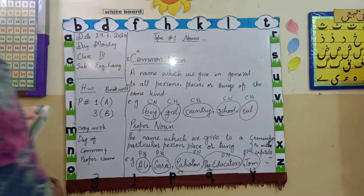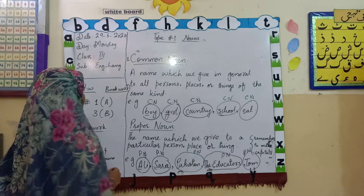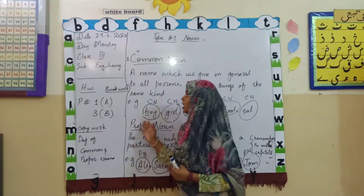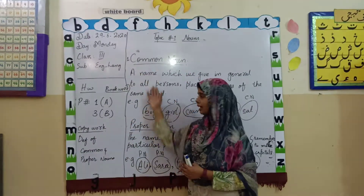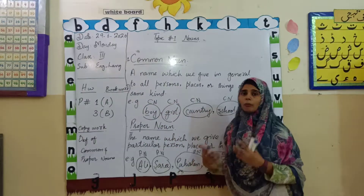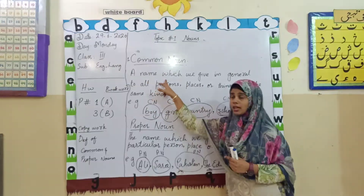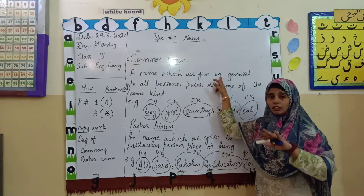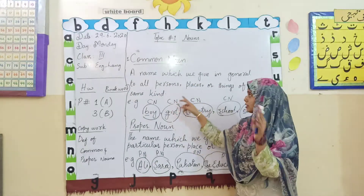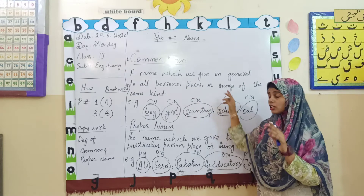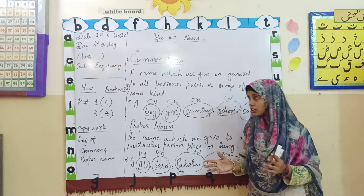So let's start learning. I have given you two types of nouns: common and proper noun. What is a common noun? A name which we give in general to all persons, places, things of the same kind.